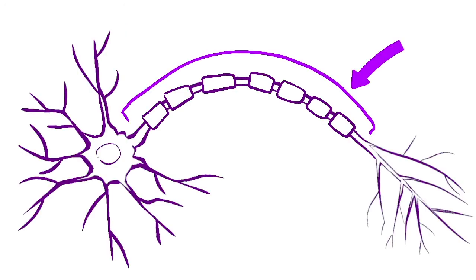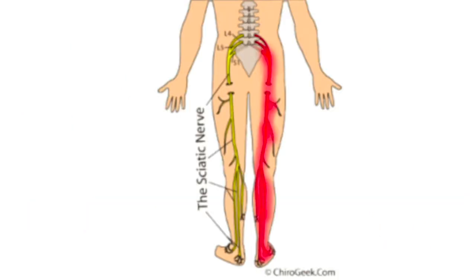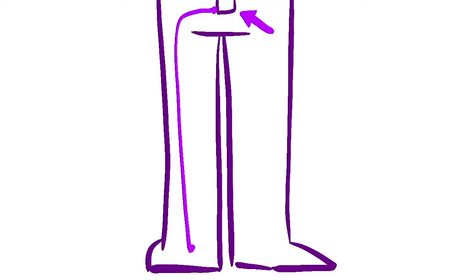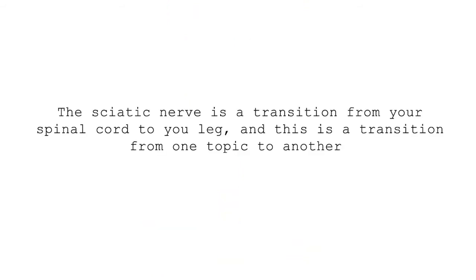Next, we reach the axon, where the action potential actually takes place. This is the really long bit of the neuron. The longest axon in your body belongs to the sciatic nerve — this long boy goes from the base of your spine all the way to the distal end of your tibia. You heard that correctly: that's in fact one cell!